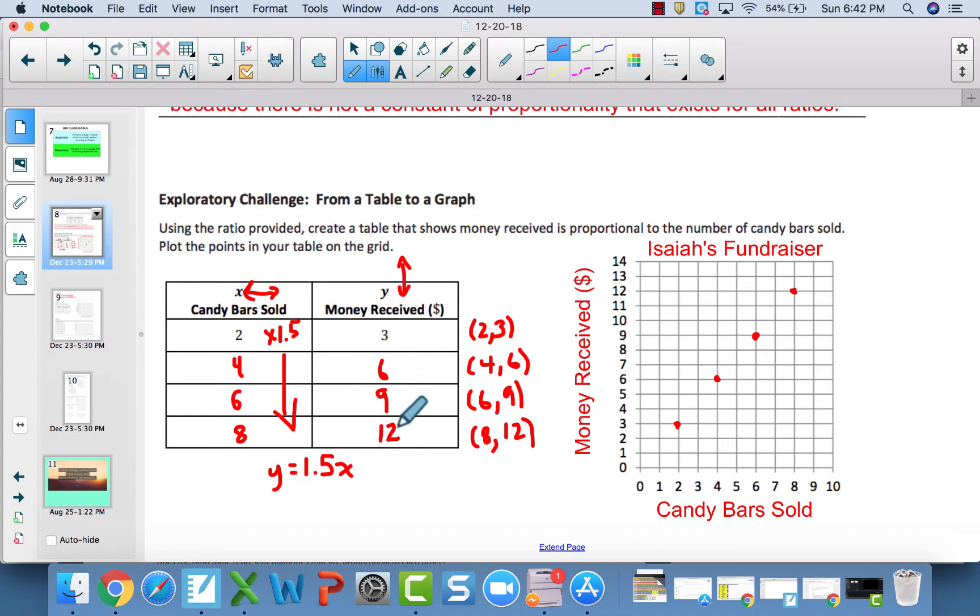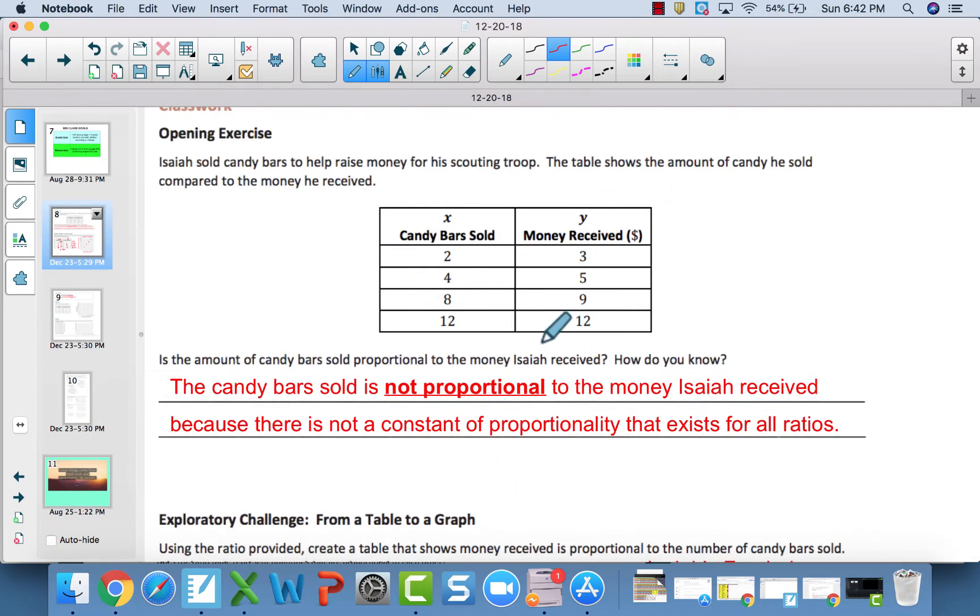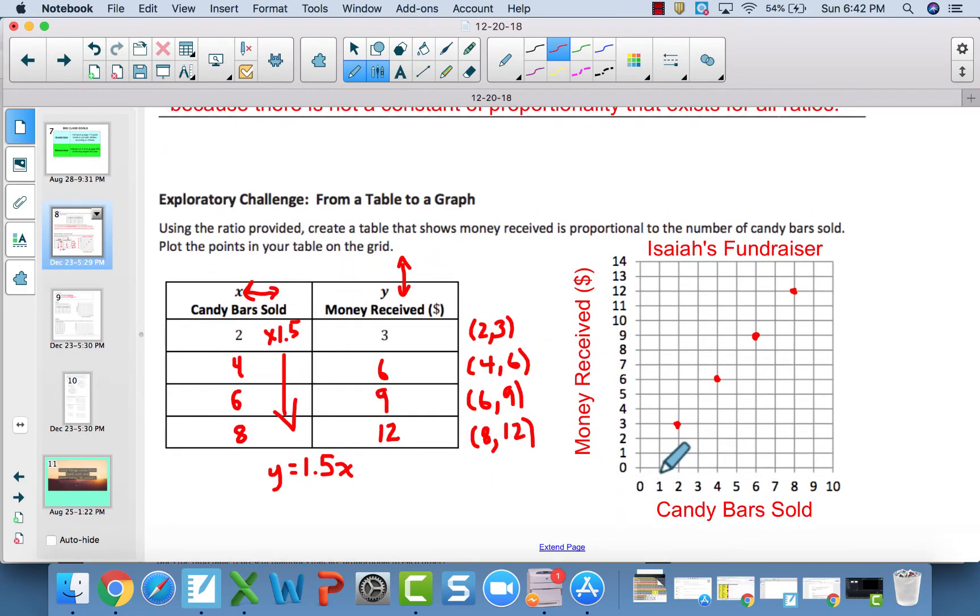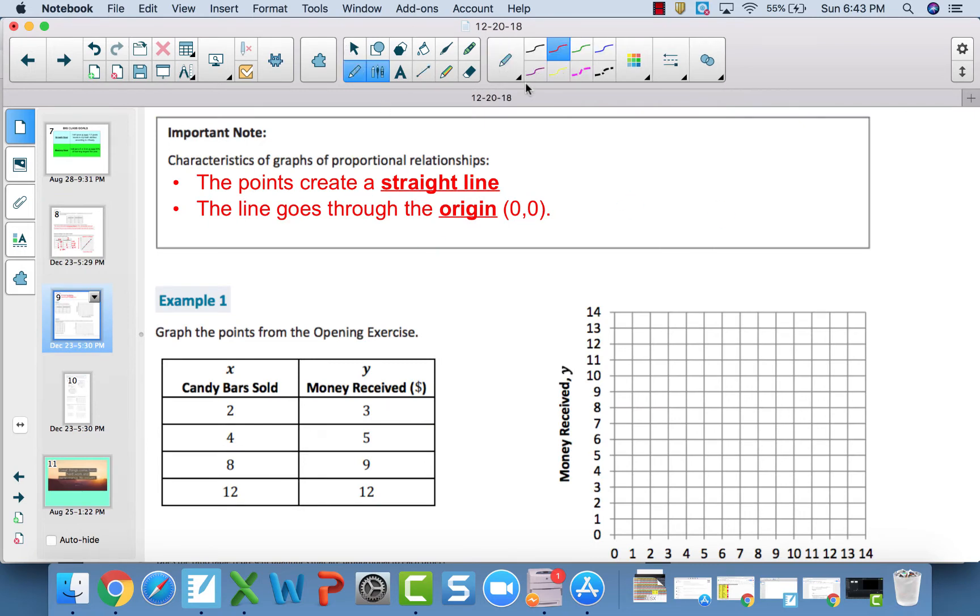To me, it looks like it starts at this zero point, which is called the origin, down here. It seems to create a pretty straight line. If I take my tools and create a straight line, it goes through every single point that we graphed, and it goes through 0, 0, which is called the origin.